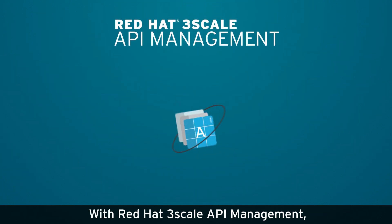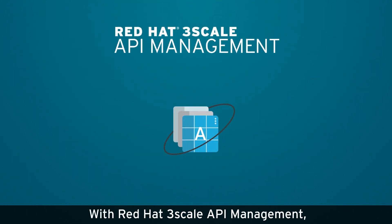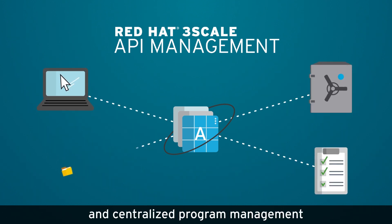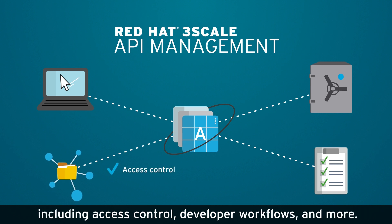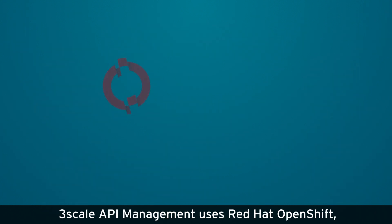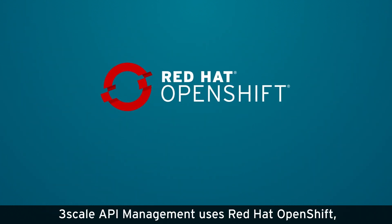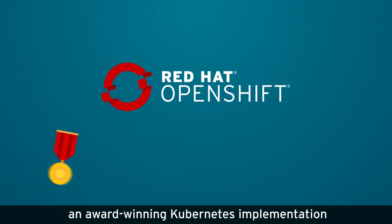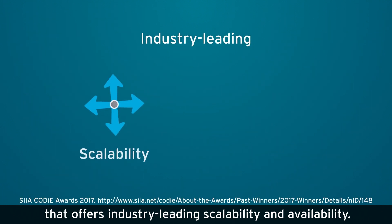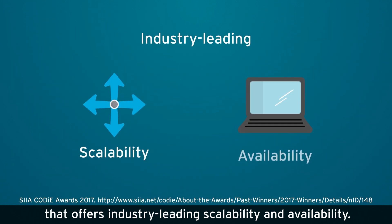With Red Hat 3scale API management, you get traffic control, security, policy enforcement, and centralized program management, including access control, developer workflows, and more. 3scale API management uses Red Hat OpenShift, an award-winning Kubernetes implementation that offers industry-leading scalability and availability.